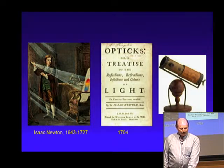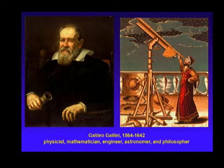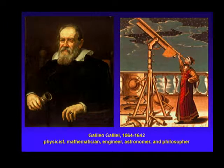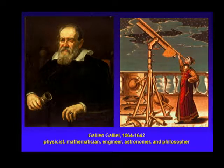Isaac Newton's ray theory and corpuscular theory described the transport of energy through systems. The real pioneer that started to combine all of the pieces in the late Renaissance and post-Renaissance era is really Galileo, driven by his interest in astronomy. He can truly be considered a physicist, mathematician, engineer, astronomer, and philosopher.